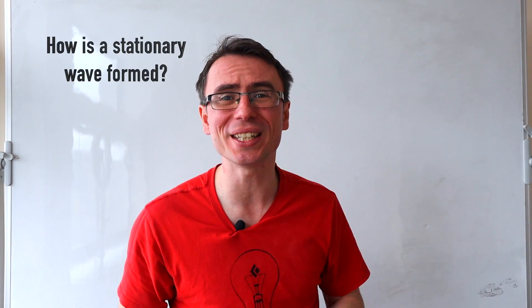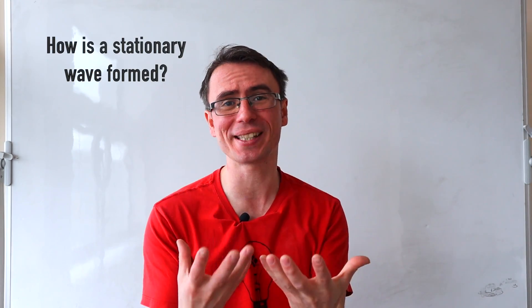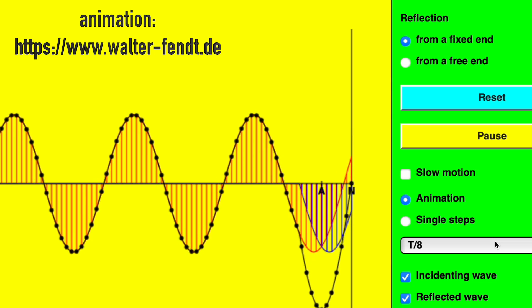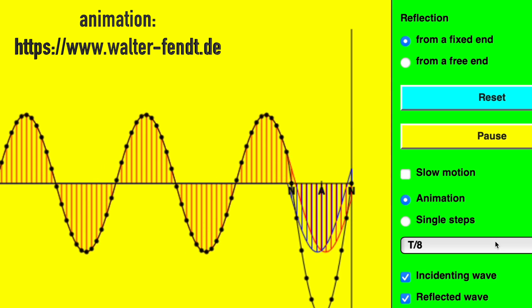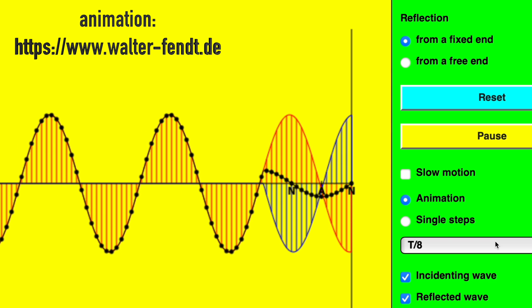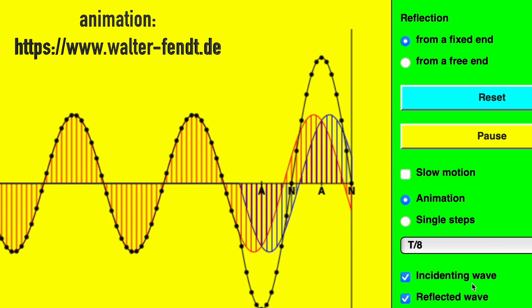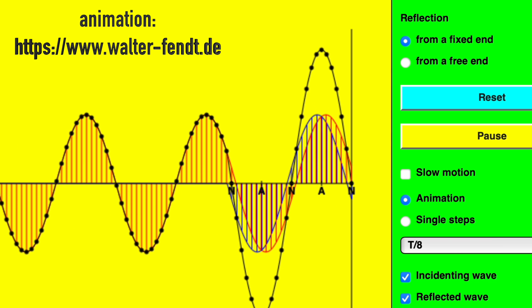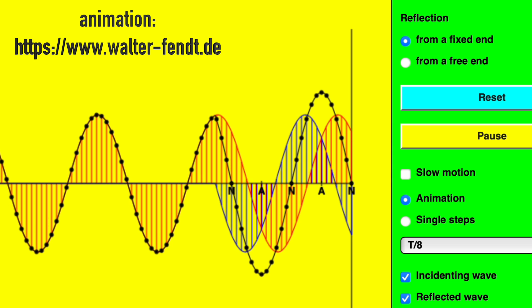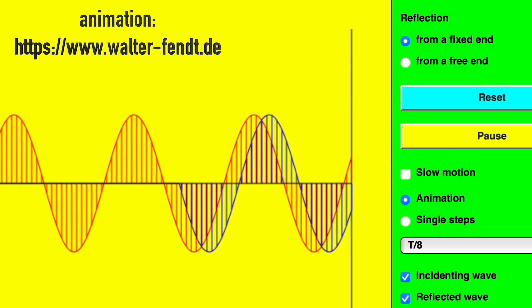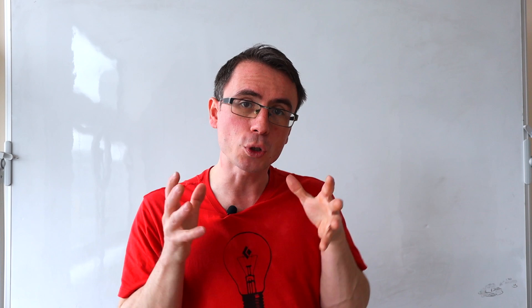Extremely often in A-level physics we are asked how a stationary wave is formed. Remember, this occurs when a progressive wave is incident at a fixed point, is reflected, and then interferes or superposes back with the incident wave, creating nodes and antinodes.